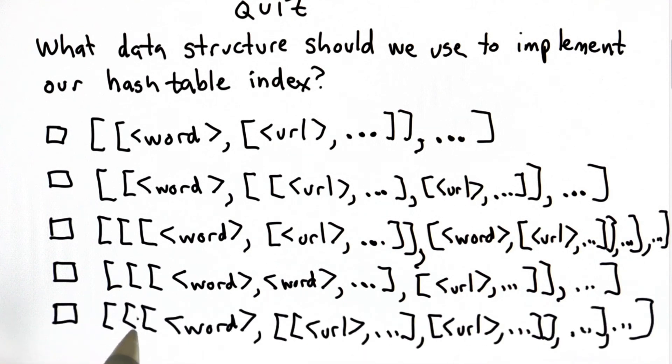For the final choice, we also have three nested lists, where each element list is a list, where the elements of that list are lists that are a word followed by a list where each element in that list is a list of URLs. Which one of these would be the best structure to use to implement a hash table?